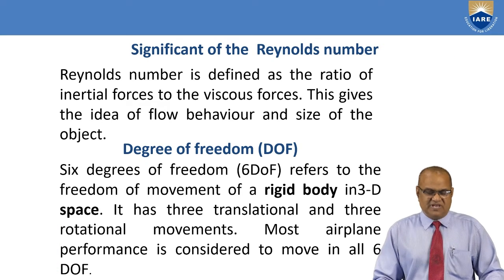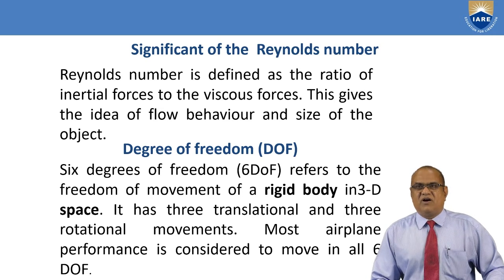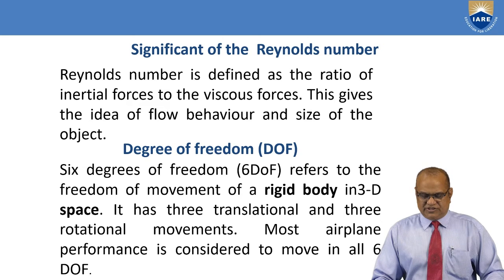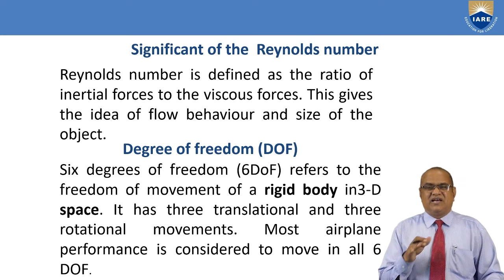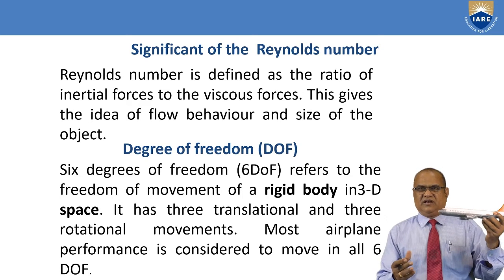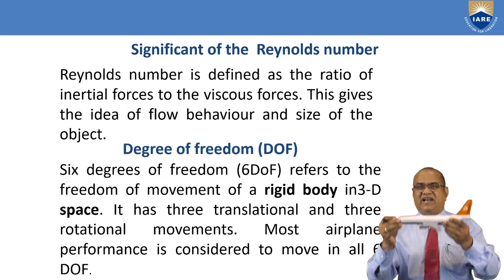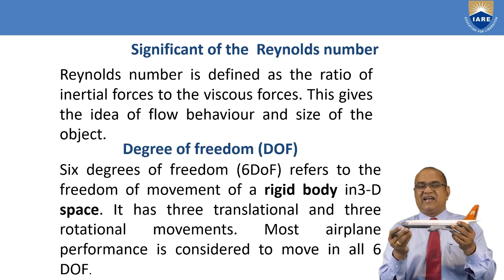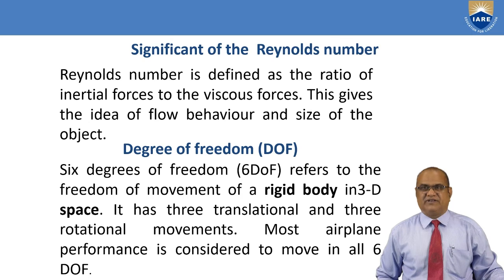Degree of freedom: there are 6 degrees of freedom, referring to the freedom of movement of a rigid body in three-dimensional space. It has three translational and three rotational movements. The three rotational movements are pitching, rolling, and yawing — this is called the 6 degrees of freedom.